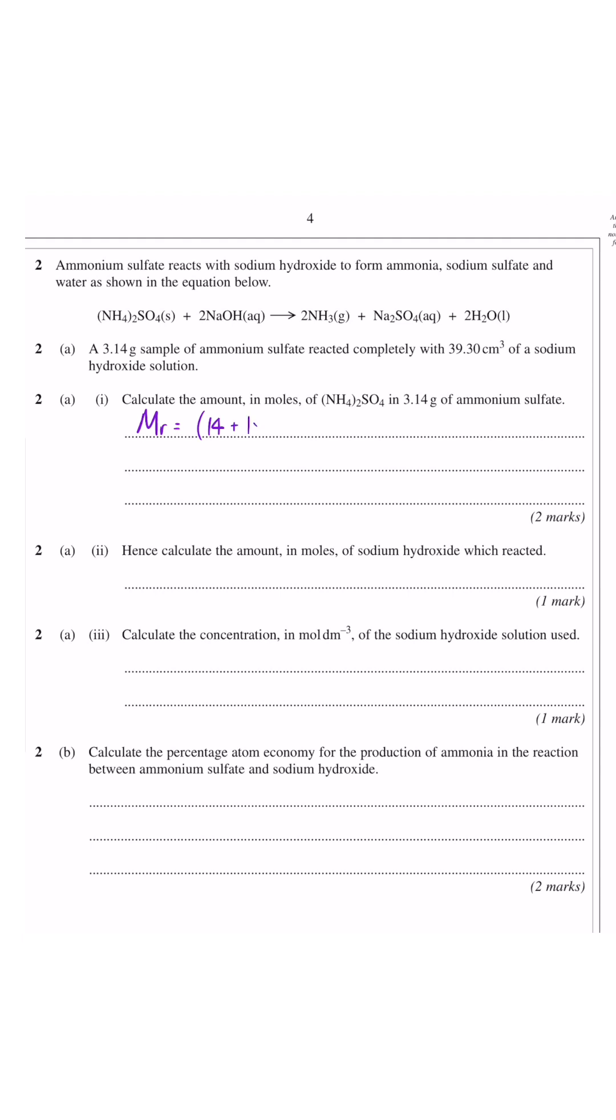First thing you want to do is work out the MR of NH42SO4. So you do 14 plus 1 times 4, all of that times by 2, add 32.1 plus 16 times 4 and that gives you 132.1.